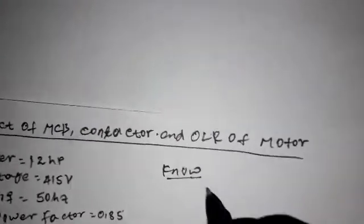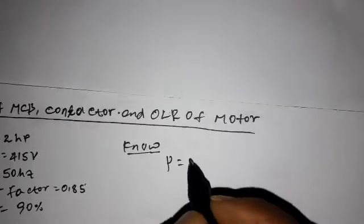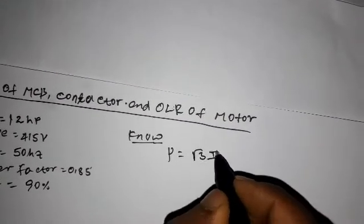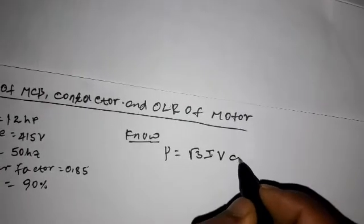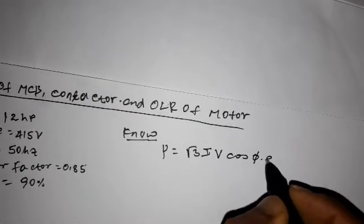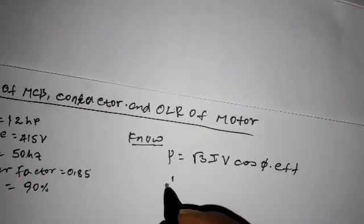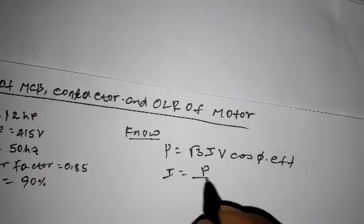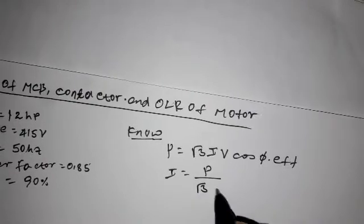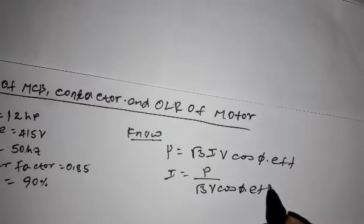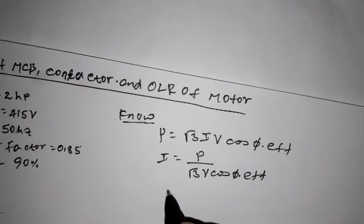Now, power is equal to √3 times current times voltage times cosine theta times efficiency. Then, current is equal to power divided by √3 voltage times cosine theta times efficiency.